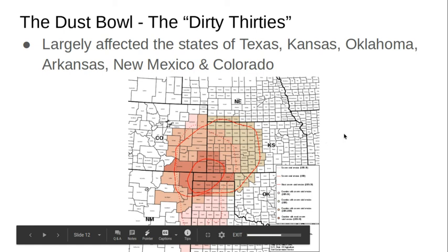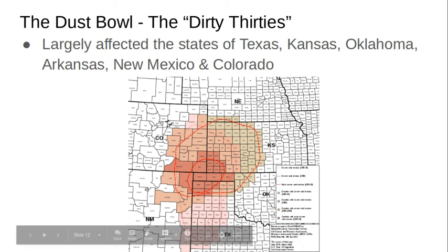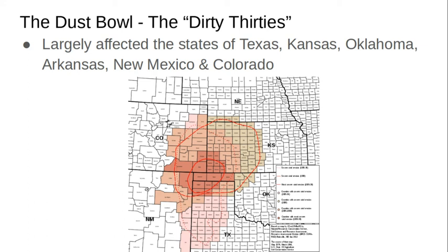This is the third lecture on the Great Depression and I'm going to focus on the Dust Bowl. The Dust Bowl, also known as the Dirty 30s, affected largely the states of Texas, Oklahoma, Kansas, Arkansas, Colorado, and New Mexico. You can see from this map that certain areas of the states were more greatly affected than others, but the entire breadbasket of the United States was pretty torn apart by the Dust Bowl.